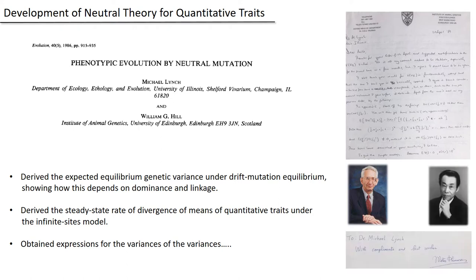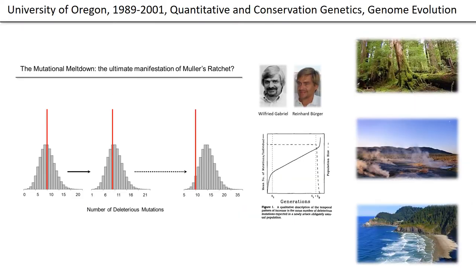Shortly thereafter, I started getting large envelopes full of reprints from this man here, who I understand was quite enamored by the idea of neutral theory. As a consequence, I'm now the proud owner of autographs from both of these major luminaries in our field. The University of Illinois was a great place to start my career. But in 1989, the University of Oregon attracted me with big trees, hot springs, and an entire ocean, and I went there to start a new program in ecology and evolution.